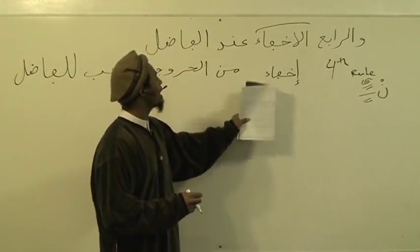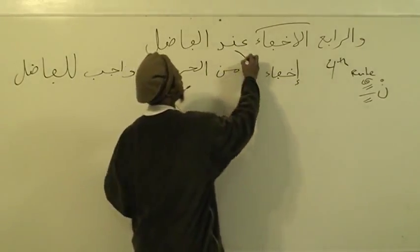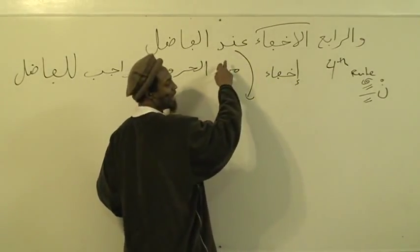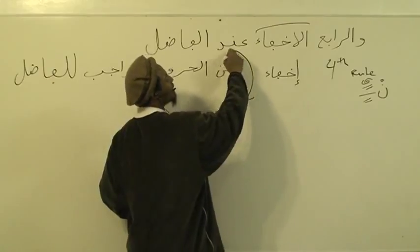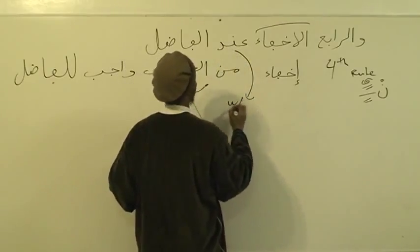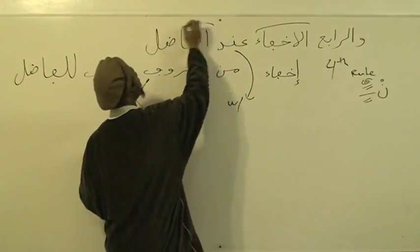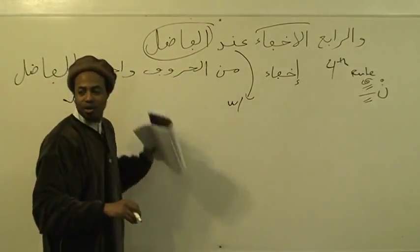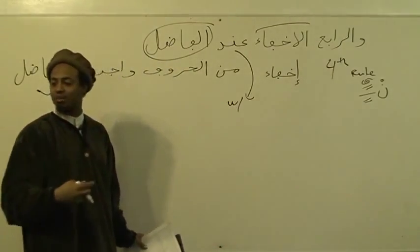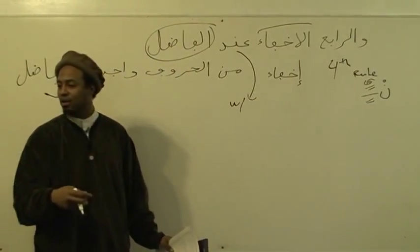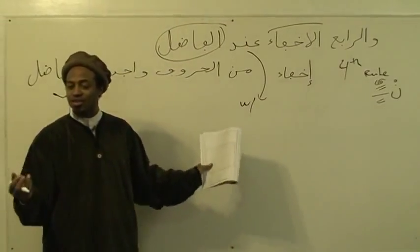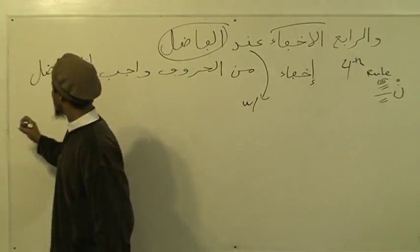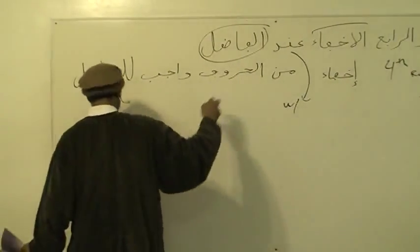It goes on to say Andal Fadli — Andal, here, means 'with' — with Al Fadli, the remainder. The remainder of the letters. Why? Because he mentioned some letters already. What letters did it name? The first rule is called Idhaar, right? It says it's the fourth rule, so what's the first rule?